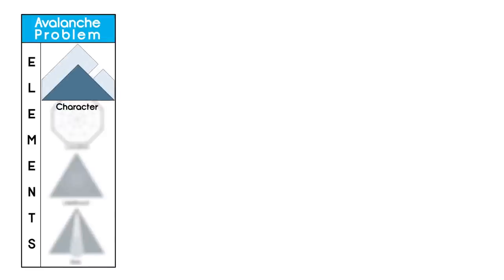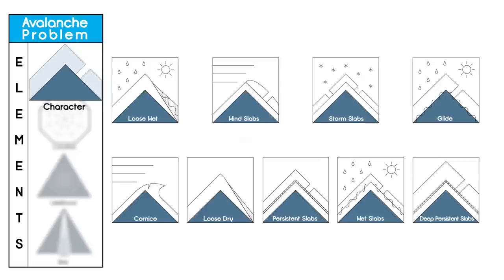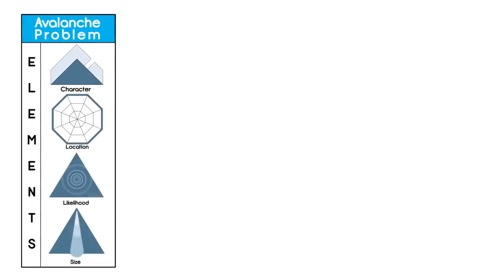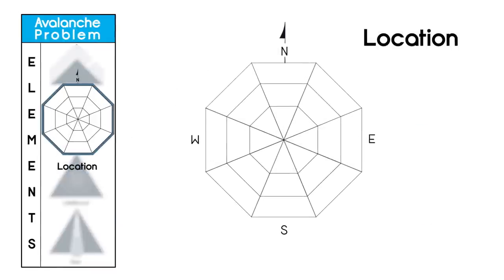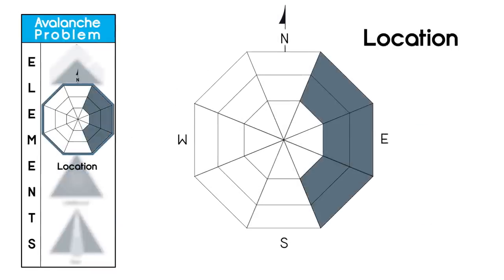Avalanche character is simply a kind of avalanche with unique characteristics that influence terrain and travel choices. In the US, we use nine distinct characters. Aspect elevation diagrams depict where these avalanches are most likely to be found.